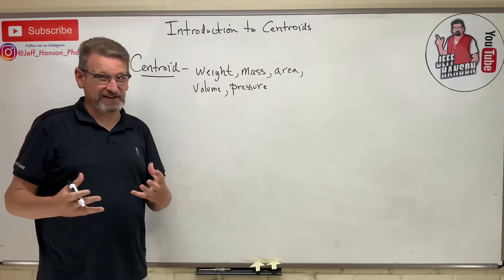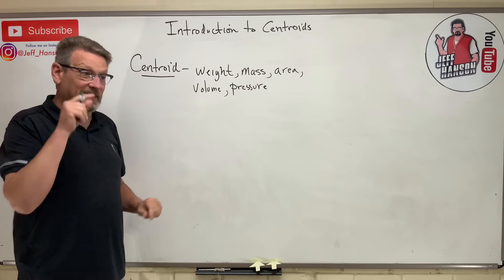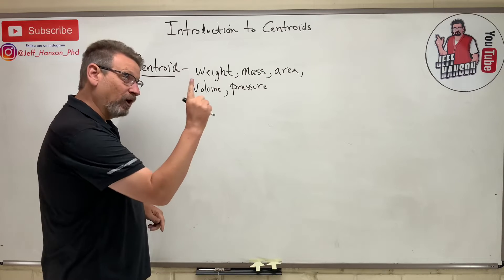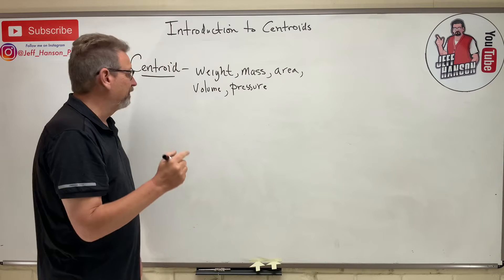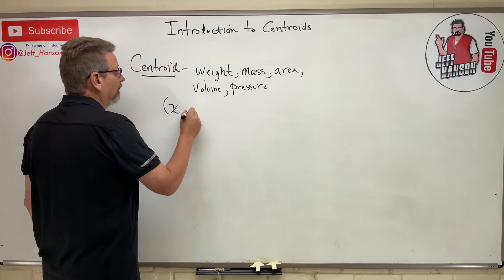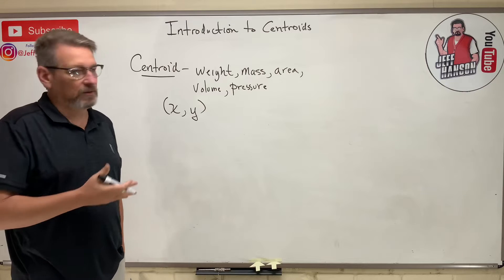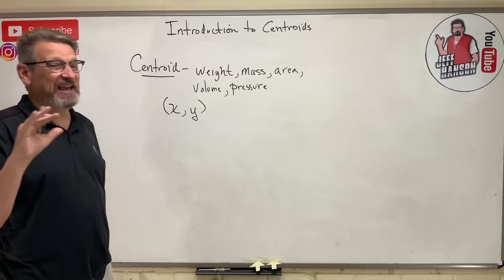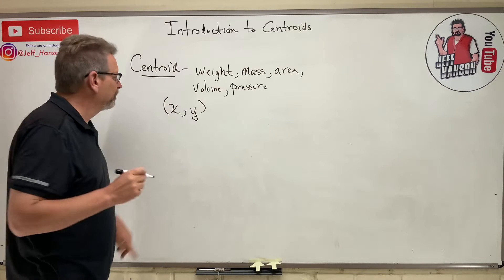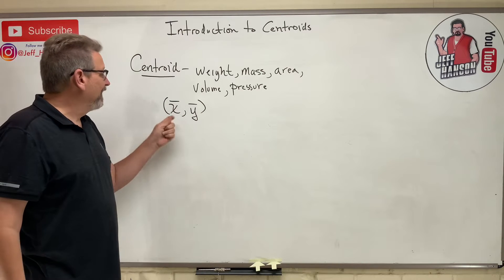A centroid is a location in space. If I had a map, the centroid would be the location where — I like to think about it — if I put my finger on that point, I could balance that whole shape on the end of my finger. So the centroid is a location with x and y coordinate points, or in 3D, a z coordinate as well.